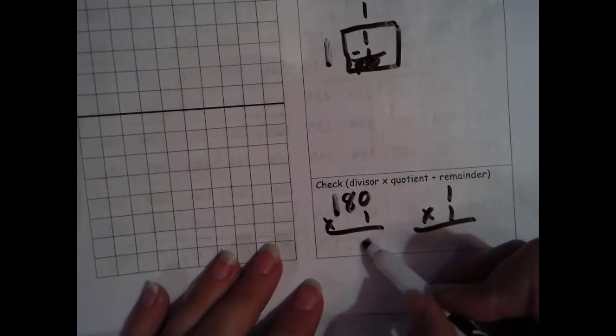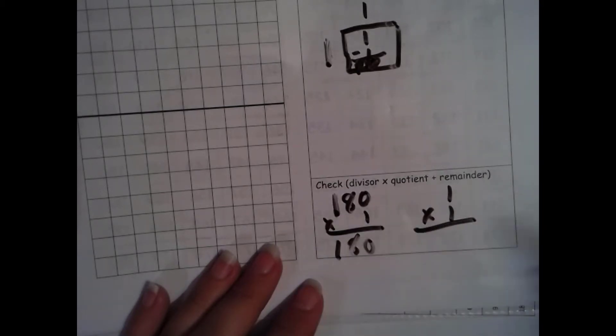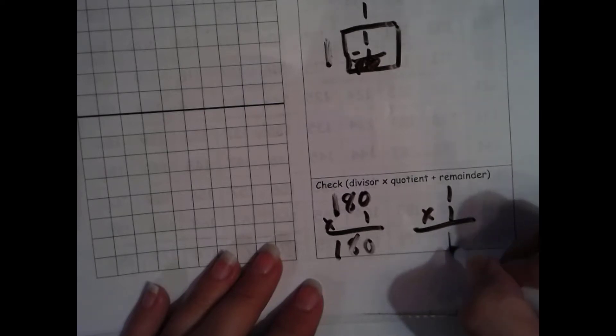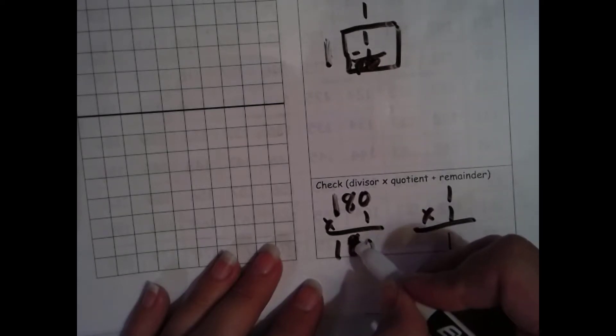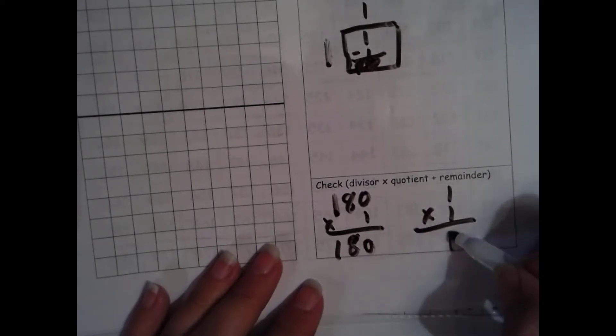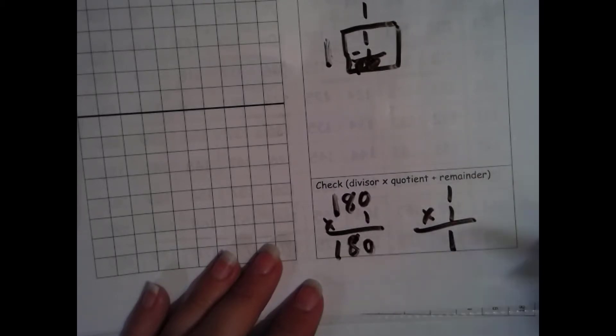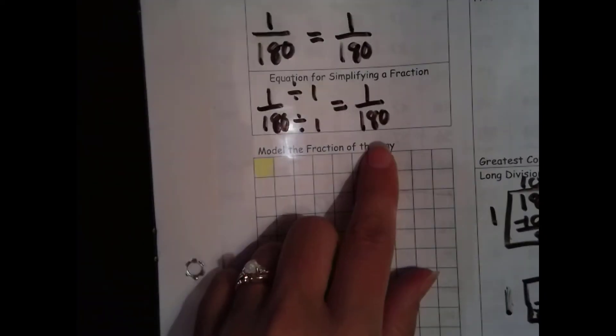1 times 0 is 0. 1 times 8 is 8. 1 times 1 is 1. That matches. What we just did is the identity property of multiplication, which says when you multiply by 1 it stays the same. But we did check. That is definitely our fraction for today.